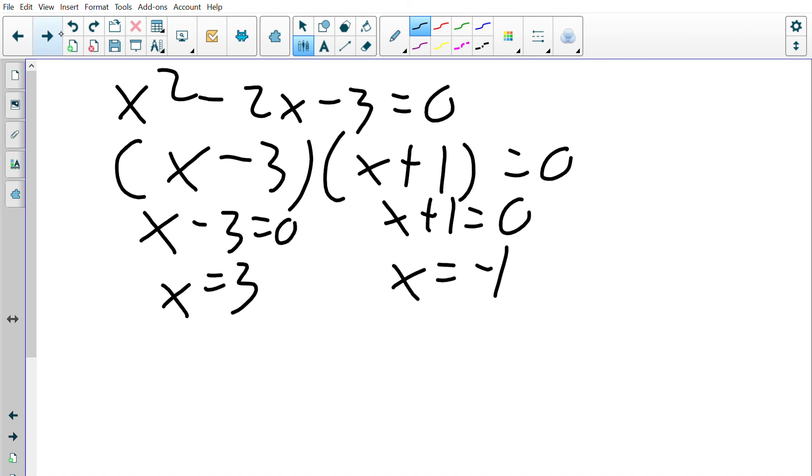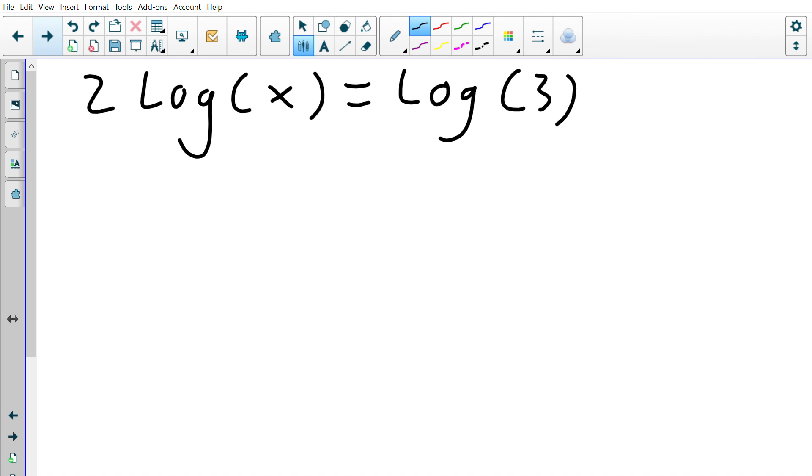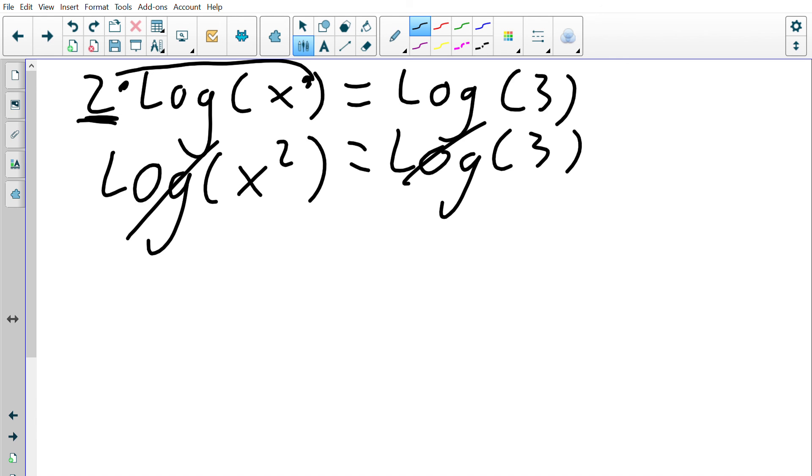And then the last thing that they can do is they can put 2 times log. 2 times log is the same as log squared, so whatever this number is in front, we can put it as the exponent inside the log and it's the same value. And why this was useful is we have log in front, log in front.